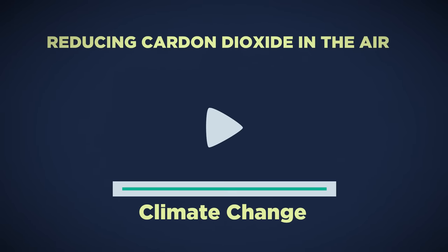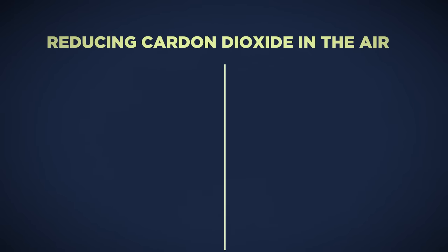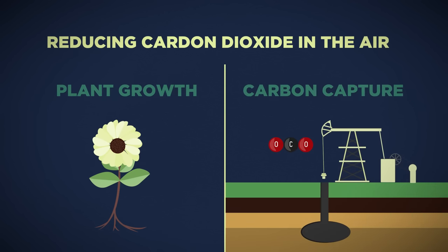See our linked video. Here we consider two ways to remove some of this carbon dioxide from the atmosphere: plant growth and carbon capture.